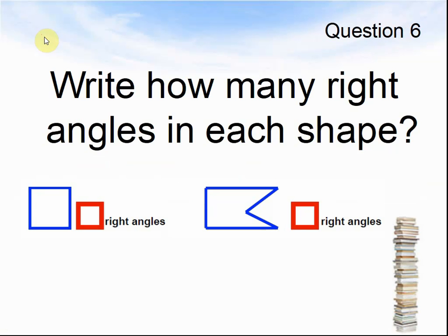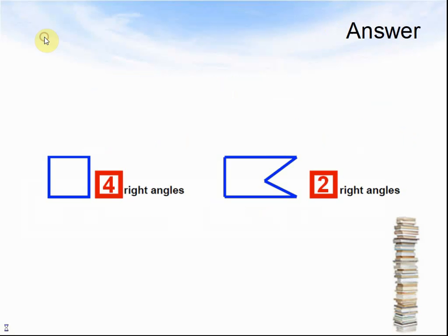Question 6. Write how many right angles in each shape. Here is a square — how many right angles does it have? Here is a flag — how many right angles does it have? Pause the video and answer the question. The answers: 4 right angles are on a square. 2 right angles were in the pennant flag.